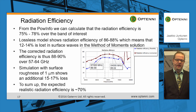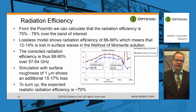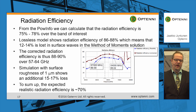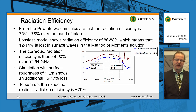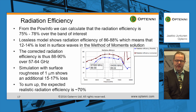Finally we analyze the radiation properties of this antenna. Using the power info measurement, we calculate that the radiation efficiency is around 75 to 78%. However, in Axiom part of the energy is lost in surface waves, but we can easily calculate the amount lost there by comparing with a lossless model. The corrected radiation efficiency is around 90%. Adding a surface roughness model into our Axiom simulation, we see that losses increase quite rapidly — about 15 to 17% additional loss — so we conclude that the realistic radiation efficiency is probably around 70%.